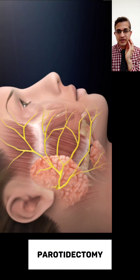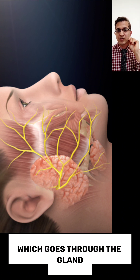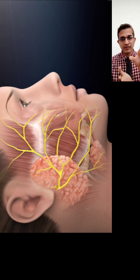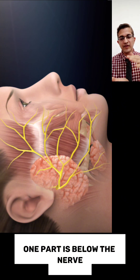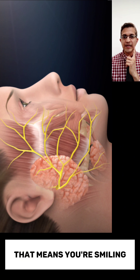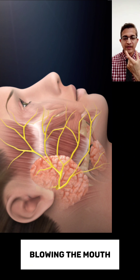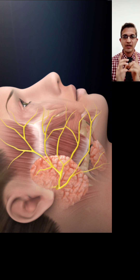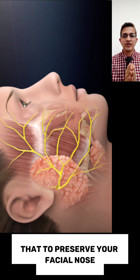That surgical procedure is called superficial parotidectomy. An important consideration is the facial nerve, which passes through the gland. The gland is made up of a superficial lobe and a deep lobe — one part is above the nerve, one part is below, and the nerve runs in between. This nerve is very important for facial expression — smiling, raising the eyebrows, closing the eyes, and blowing the mouth are all controlled by the facial nerve. There are two facial nerves on either side, and every surgeon will take care to preserve them.